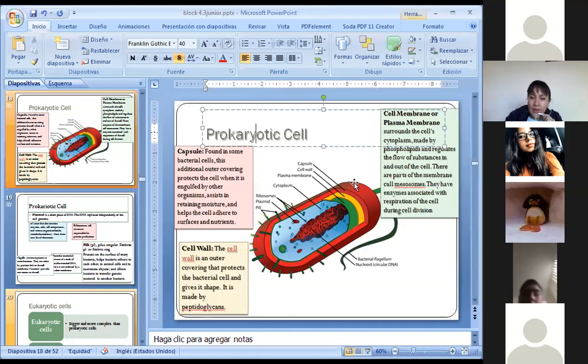Mientras que, vamos con la cell wall, que sería en color amarillo. The cell wall is an outer covering that protects the bacterial cell and gives the shape. And it's made by peptidoglycans. Remember peptidoglycans. Glyco. Where? Question. Where does glyco come from? De donde viene la palabra glyco? Glucose, glucose. Or glúcido. Glucose or glúcido. Good job. Ahora, que función tiene? If it is in the cell wall or making the cell wall, what will be the function of this?